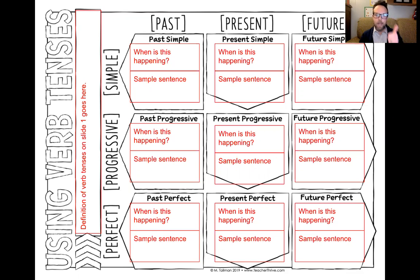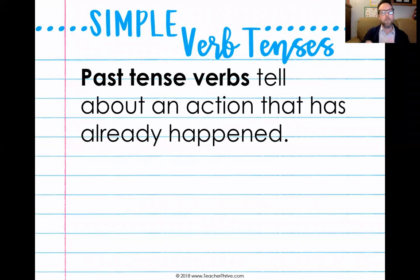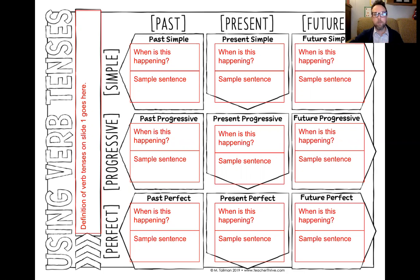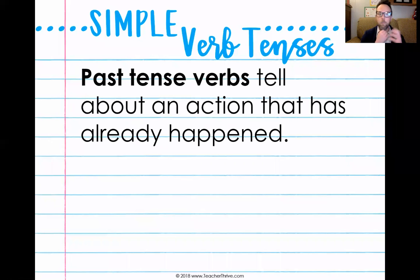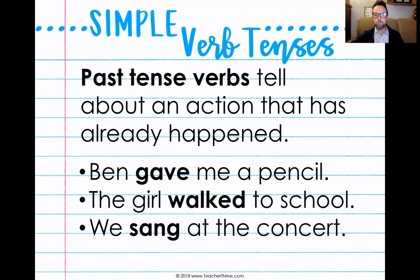For each section — past, present, and future — there are two sections for each block of notes: when is it happening, and then a sample sentence. Each verb can be categorized as simple, progressive, and perfect, but also past, present, and future. Starting with simple past: past tense verbs tell about an action or something that has already happened. For example, 'Ben gave me a pencil,' 'The girl walked to school,' 'We sang at the concert.' The 'when' for this section is: an action that has already happened.